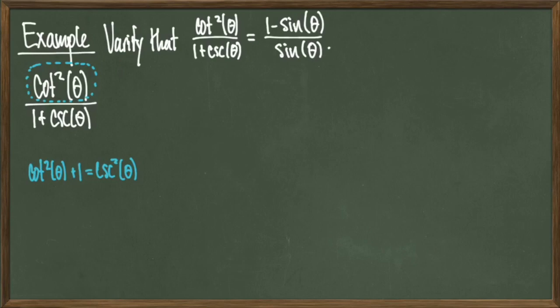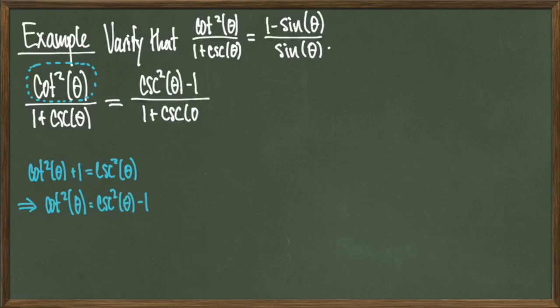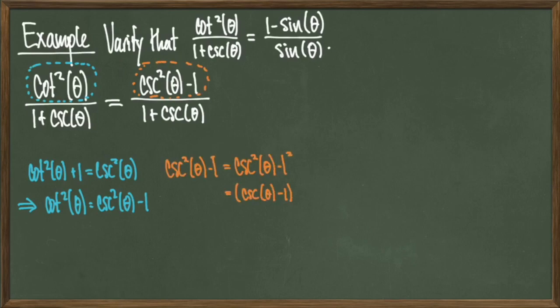I notice that by the Pythagorean identity, cotangent squared of theta plus 1 equals cosecant squared of theta, so I can solve for cotangent squared of theta to get cotangent squared of theta equals cosecant squared of theta minus 1. Making this replacement in the numerator, I get cosecant squared of theta minus 1 over 1 plus cosecant theta. Then I write cosecant squared of theta minus 1 as a difference of squares, which factors into cosecant theta minus 1 times cosecant theta plus 1.